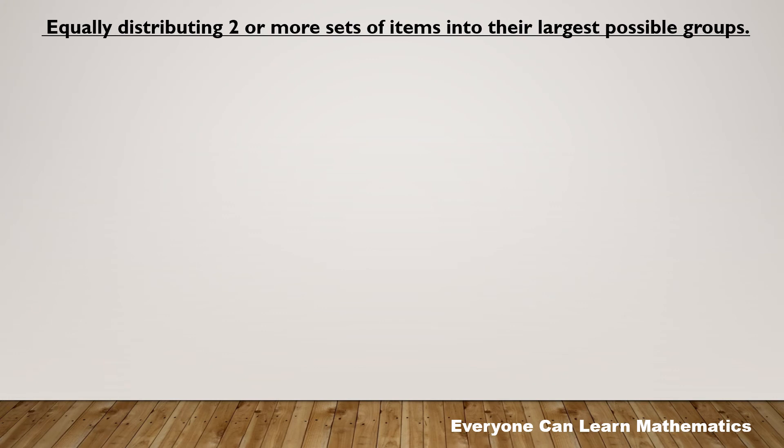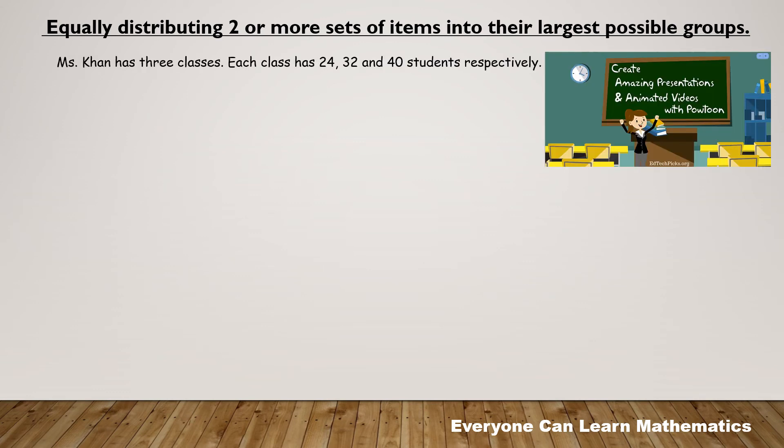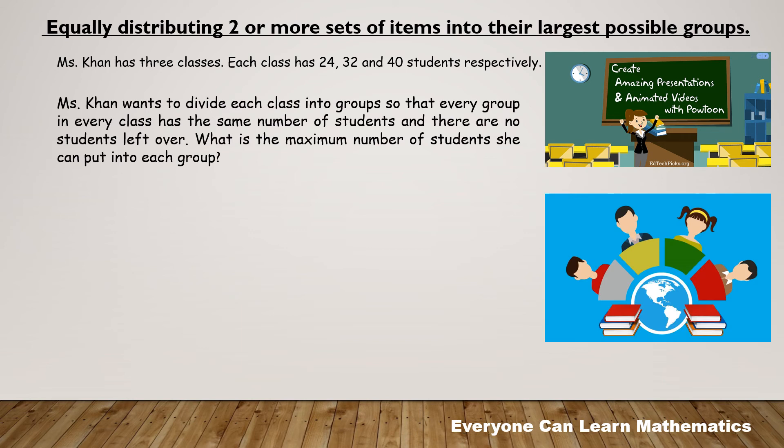Here in this example, we will see how HCF can help us to equally distribute two or more sets of items into their largest possible groups. Miss Khan has three classes. Each class has 24, 32, and 40 students respectively. Miss Khan wants to divide each class into groups so that every group in every class has the same number of students and there are no students left over. What is the maximum number of students she can put into each group? Again, the word maximum indicates that we need to find the highest common factor of 24, 32, and 40.